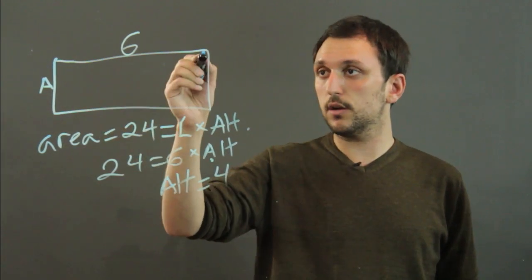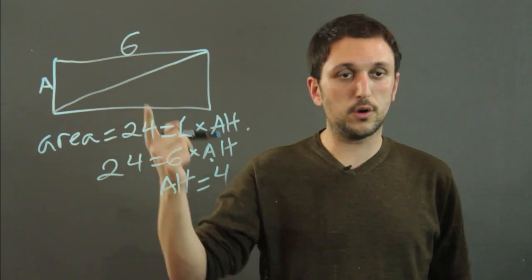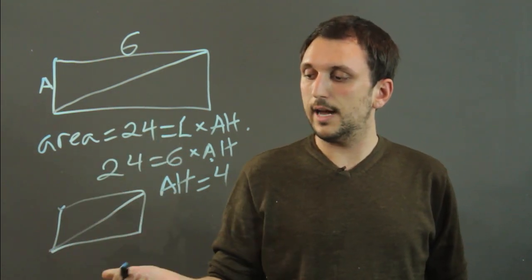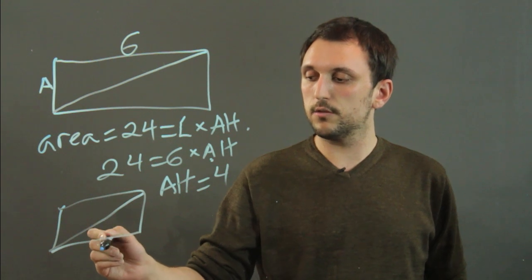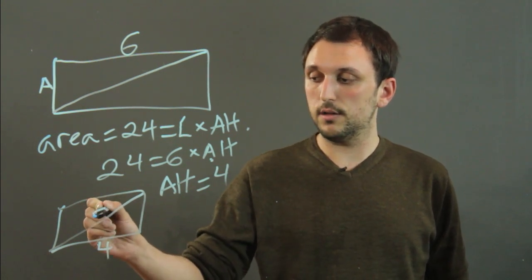Now if we knew the diagonal, let's say we have, actually I'll draw a new rectangle. If we know the diagonal here and we know the length is say 4 and the diagonal is 5,